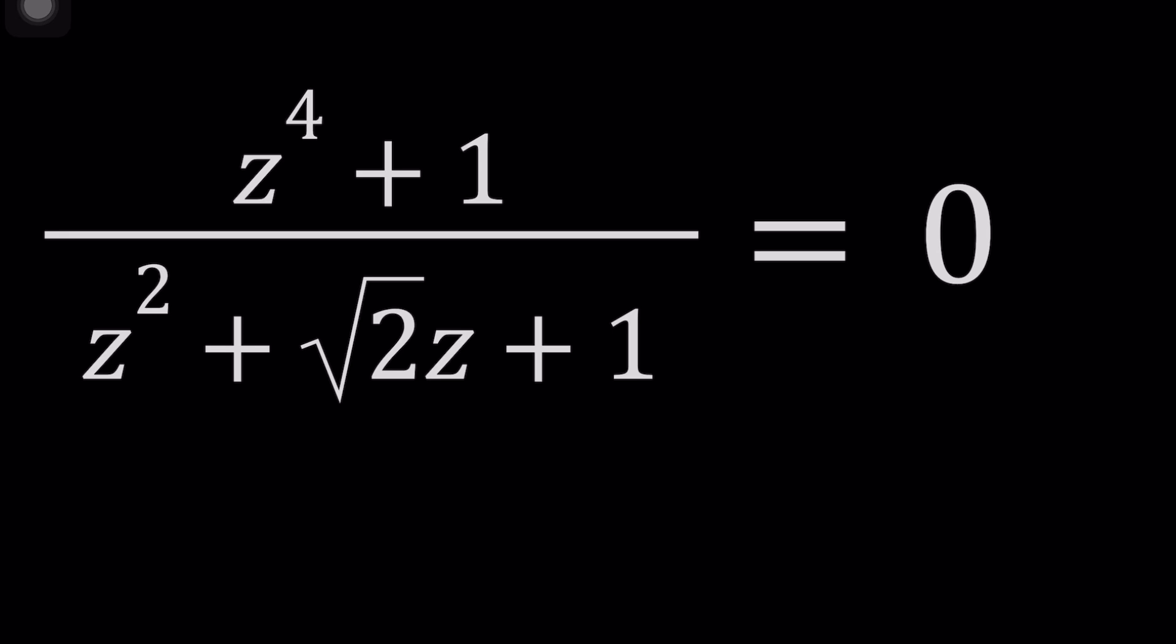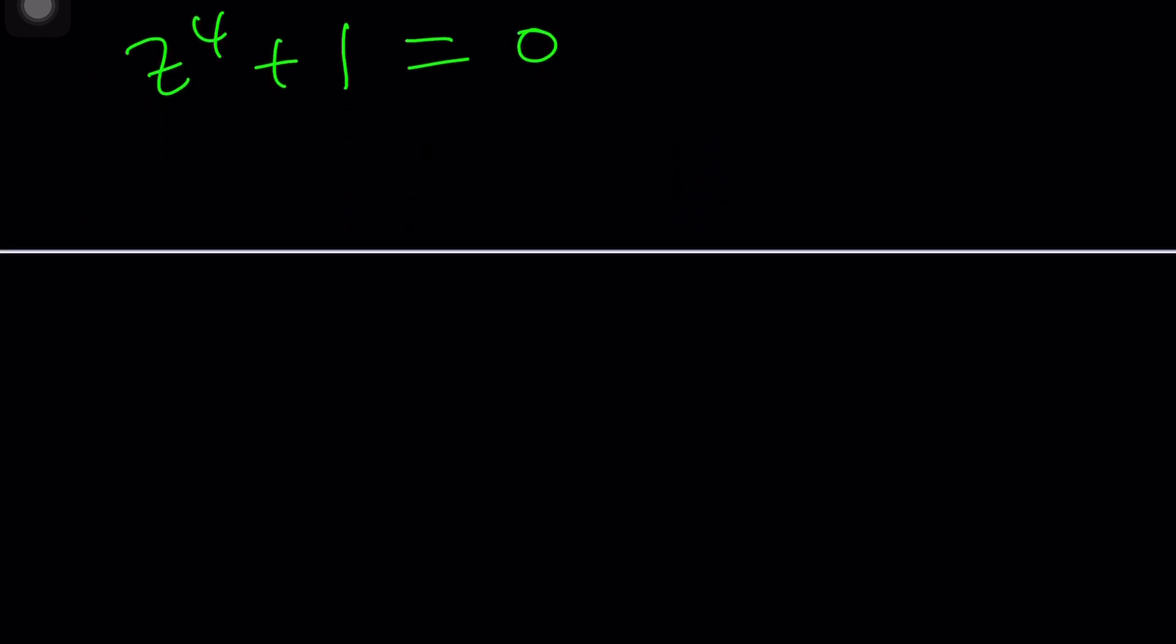First of all, if you do cross multiplication, you're going to be running into some trouble. You multiply, you get z to the fourth plus one equals zero. If z is real, there are no solutions, but guess what? This channel is all about complex numbers.